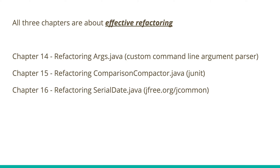Chapter 16 has even more code snippets, reviewing SerialDate.java, which is available at jfree.org. He builds up line by line, reviewing everything from the class name to method names, to constants, to enums that he introduces, and how he refactors various classes. It's a great exercise in itself showing the benefits of refactoring and how to go about it.